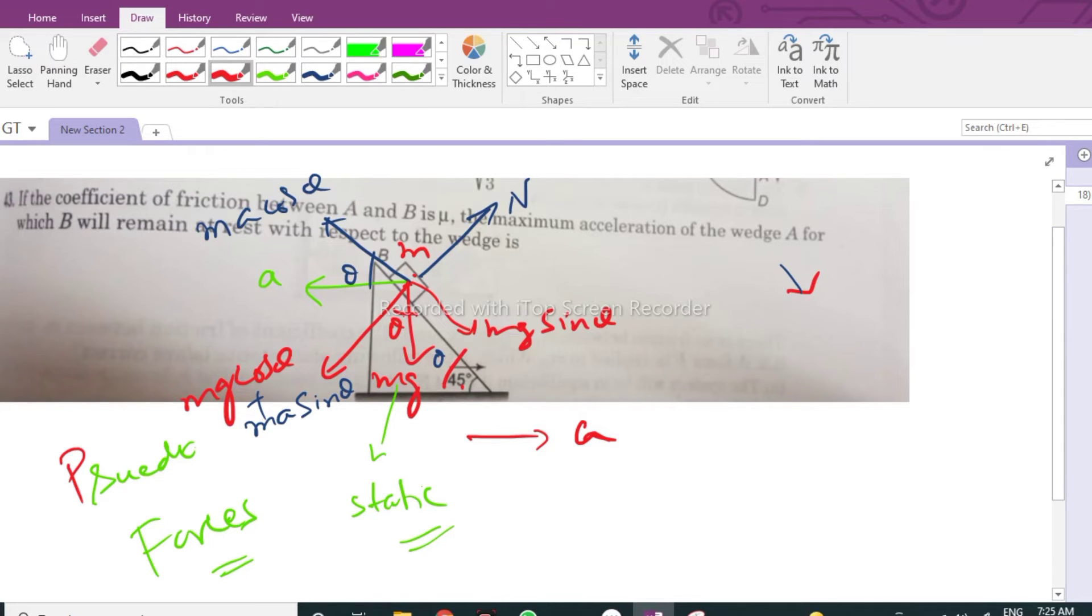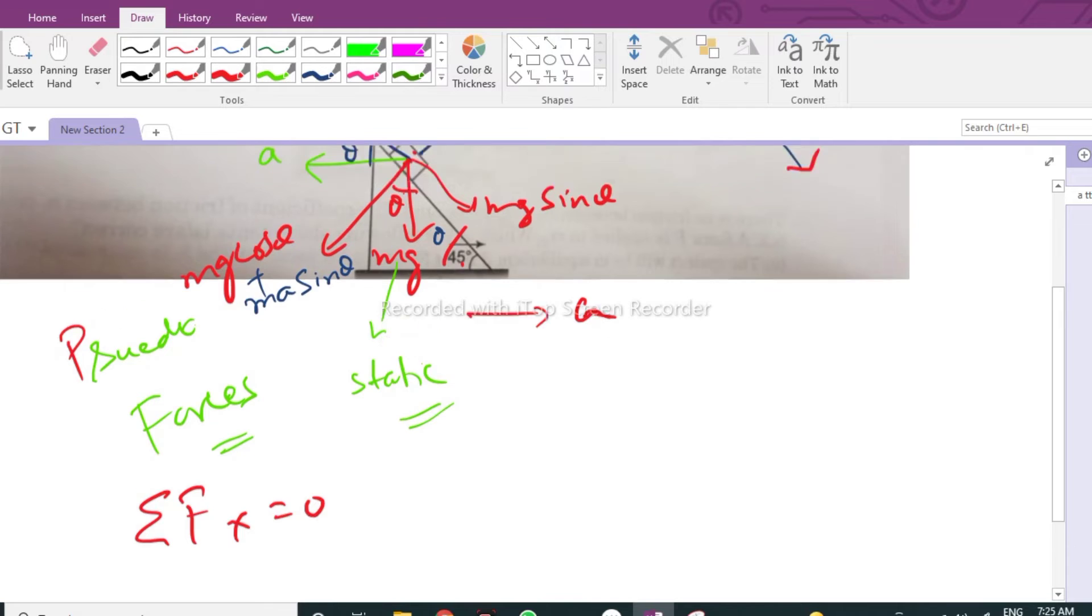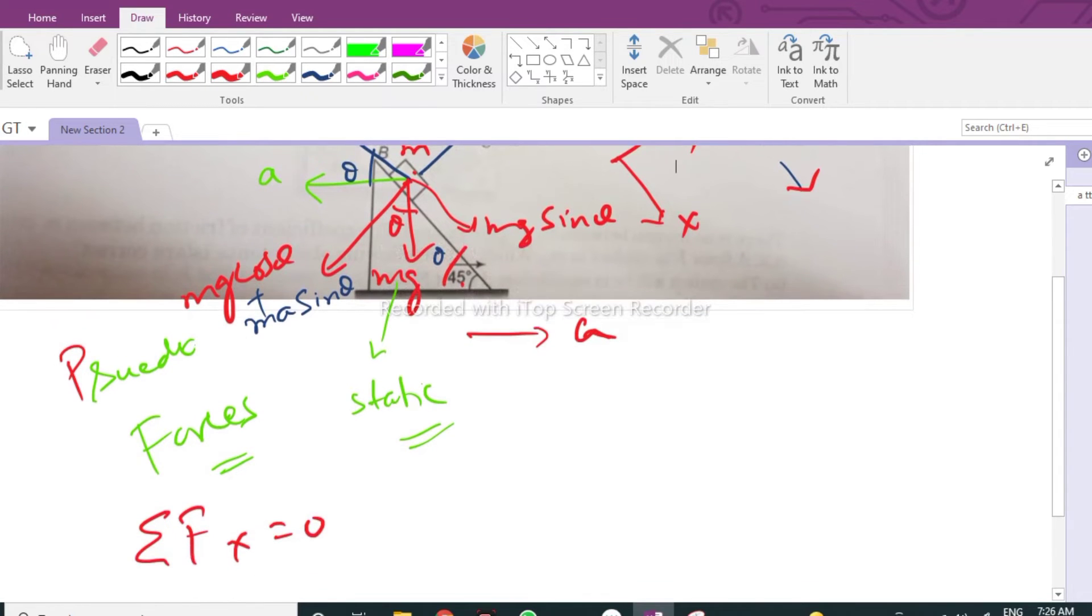And the block tries to slide down, so the friction force will be acting up. Now let us frame the equilibrium conditions. First, sigma Fx equals zero. I'm taking this as x and this as y.